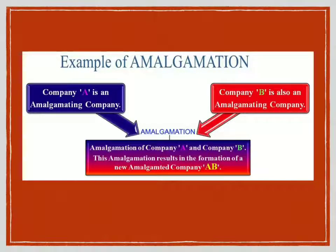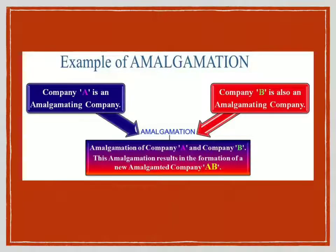Here you can see Company A is an amalgamating company and Company B is also an amalgamating company. Both Company A and Company B are going into amalgamation. This amalgamation results in the formation of a new amalgamated company. Company A goes into dissolution, likewise Company B also goes into dissolution, and a separate new company is formed. That new company may be named by combining the older companies' names, and it is a separate company with a separate name and separate identity — for example, AB company.